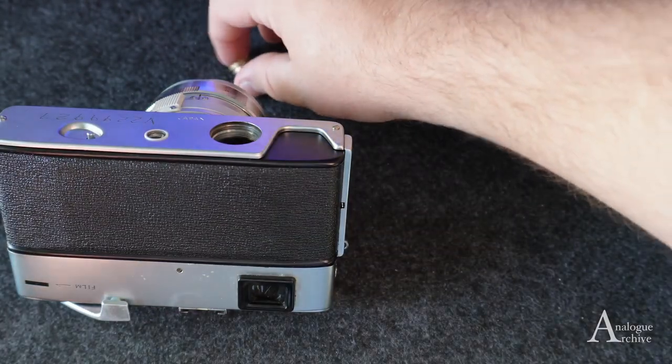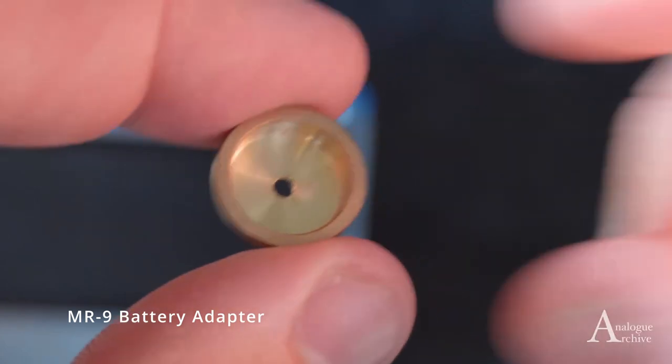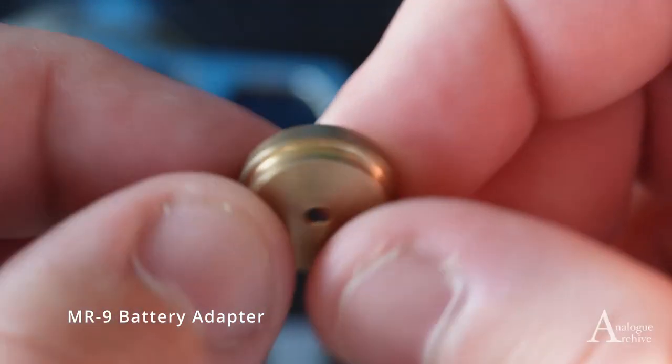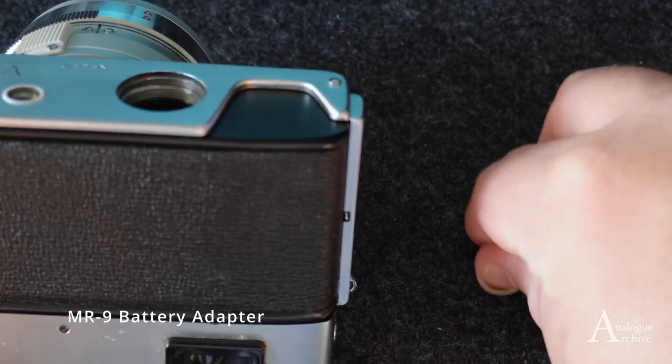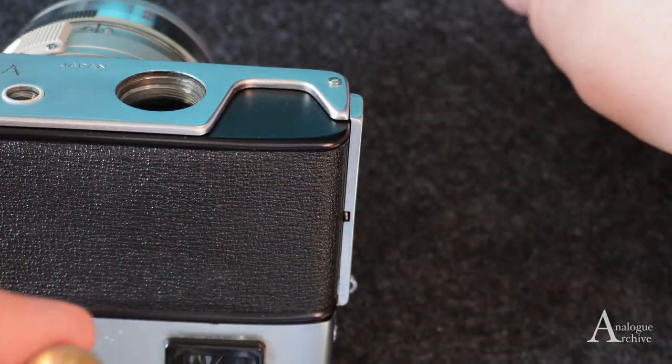Alright, so first things first, the batteries for this camera are actually quite difficult to get your hands on. So some lovely people have made these things called MR-9 adapters. You can get these pretty easily on the internet. I got this one from Amazon, for example.